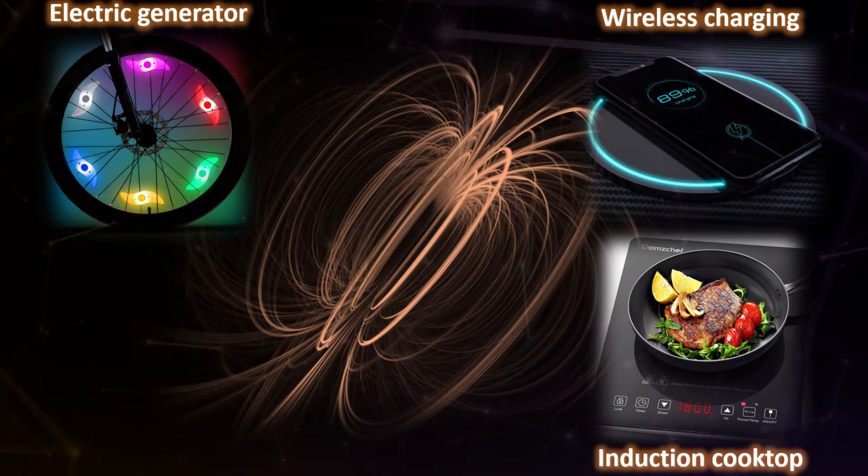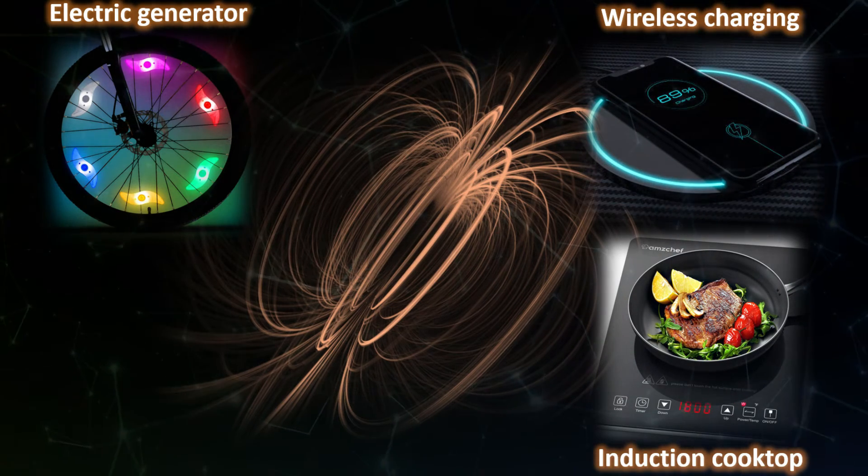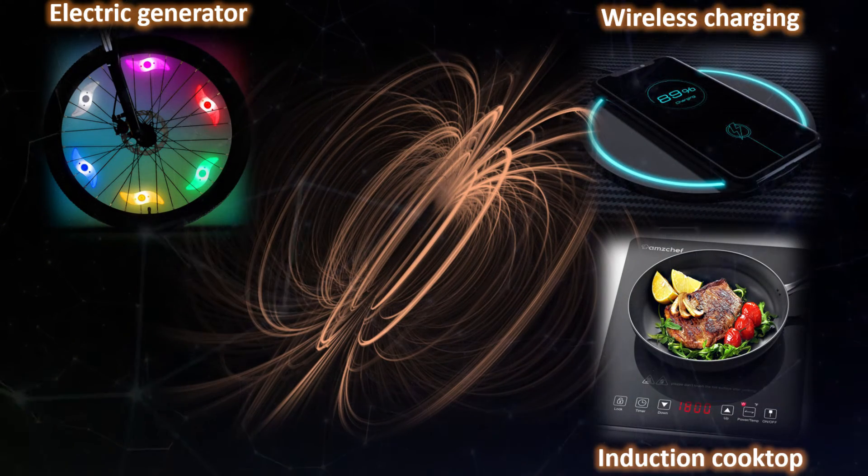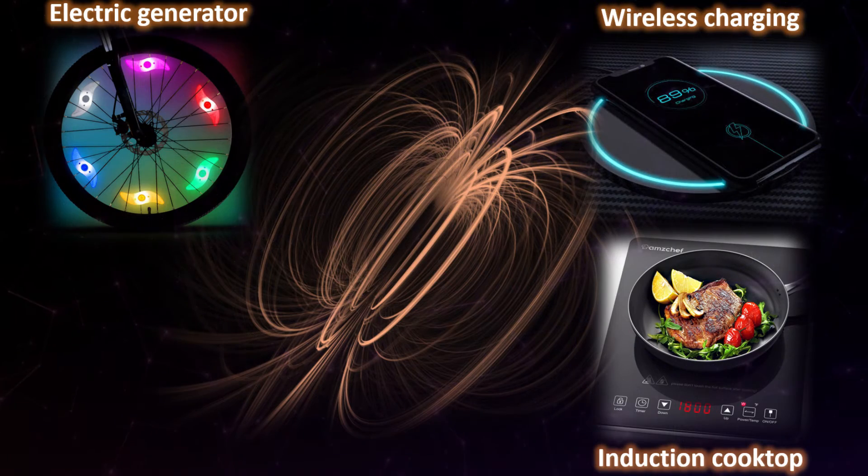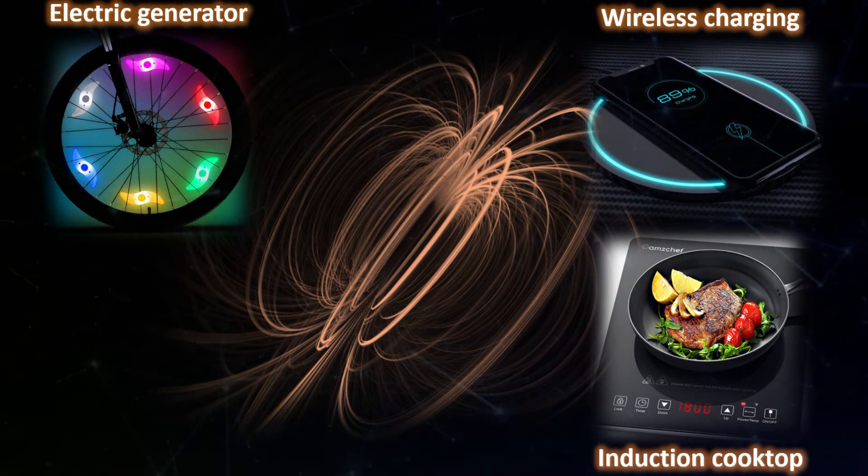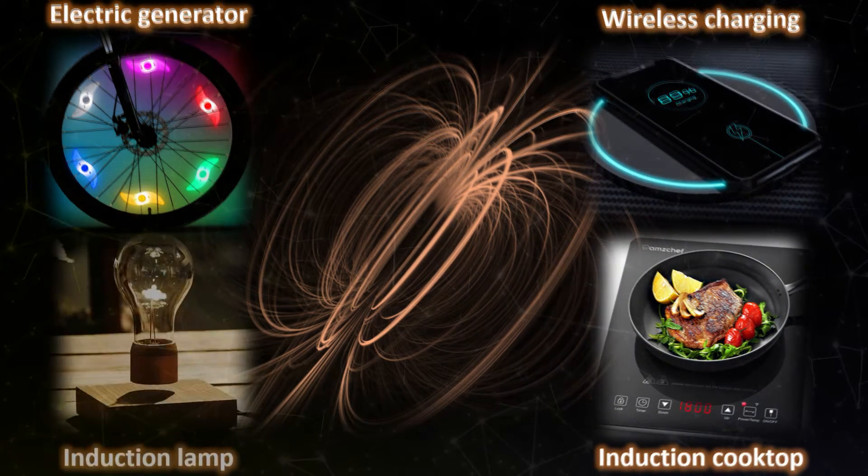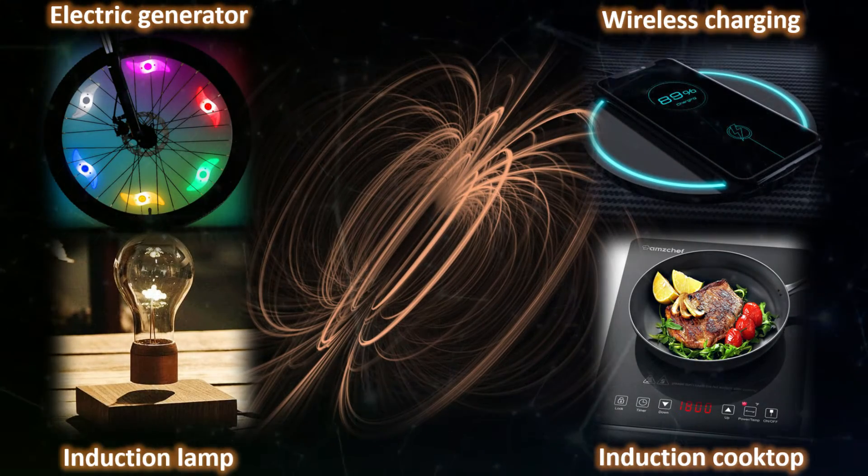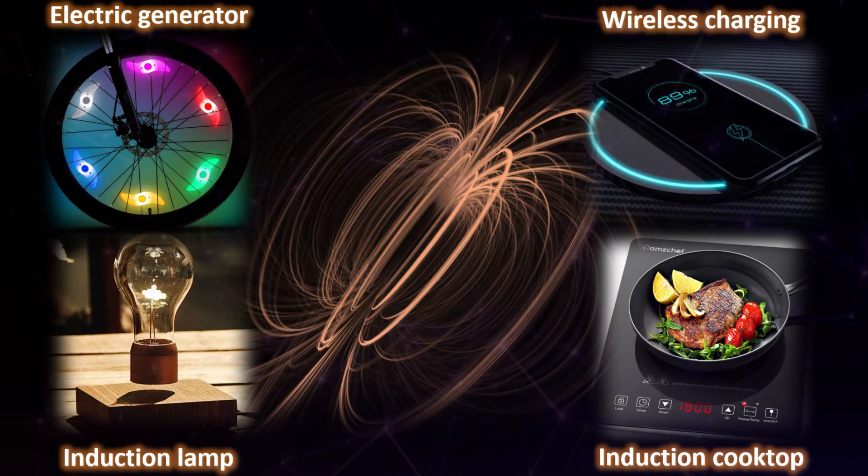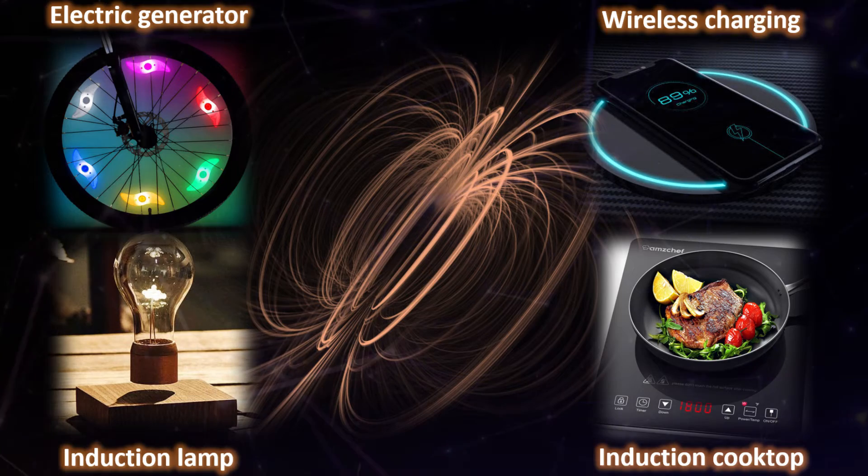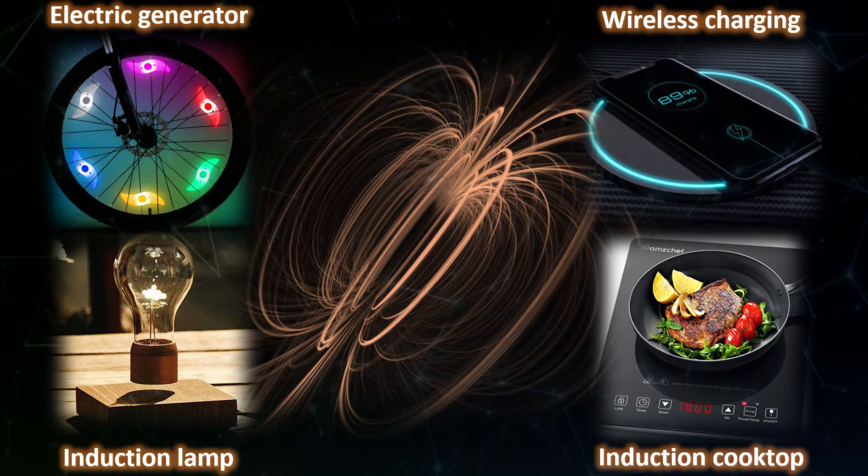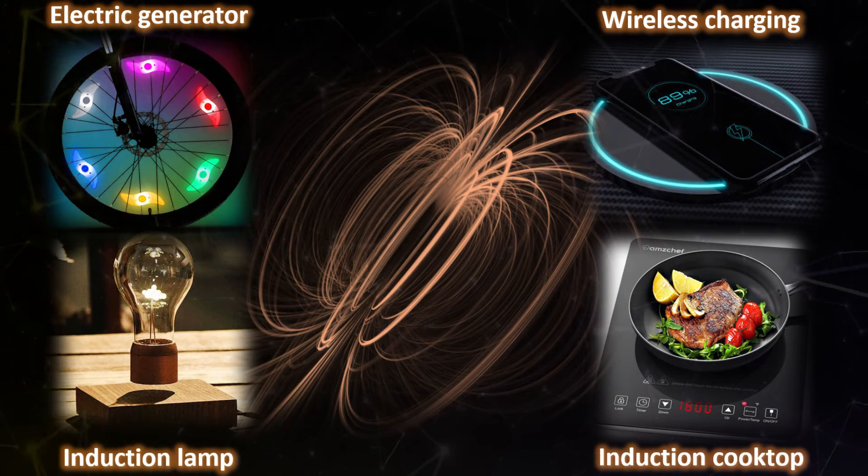Most kitchens use an induction cooktop where coils located just underneath carry an alternating current which produces a changing magnetic field leading to eddy currents on the cooking pan and produces heat. Similar wireless power transfer can also be used to light up an induction lamp hovering in the air. Michael Faraday's discovery of electromagnetic induction dramatically changed the way we lived.